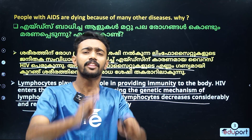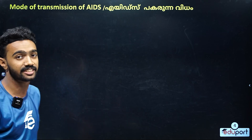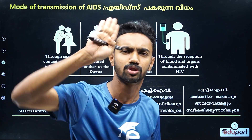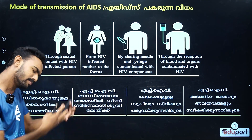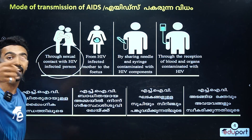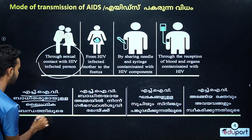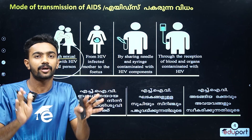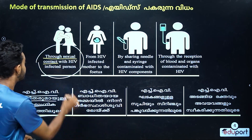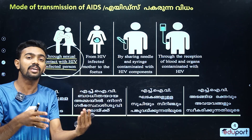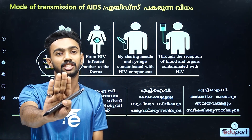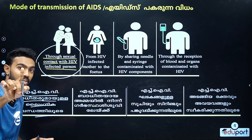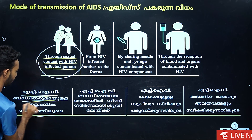The mode of transmission of AIDS. The first thing you can learn is through sexual contact — through sexual contact with an HIV-infected person. That is HIV infected. If through sexual contact you try to get HIV, why don't you actually get AIDS through sexual contact with HIV-infected persons? That's one reason.